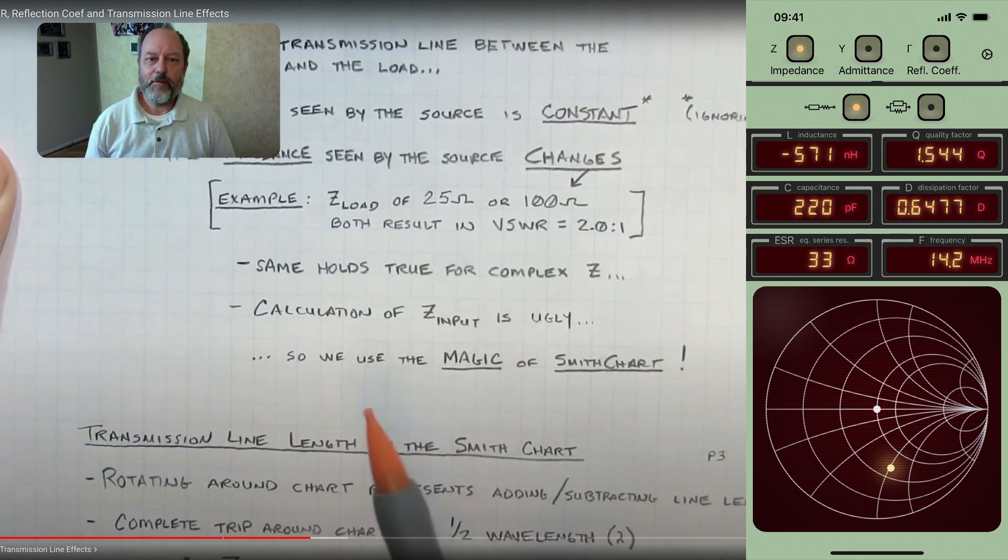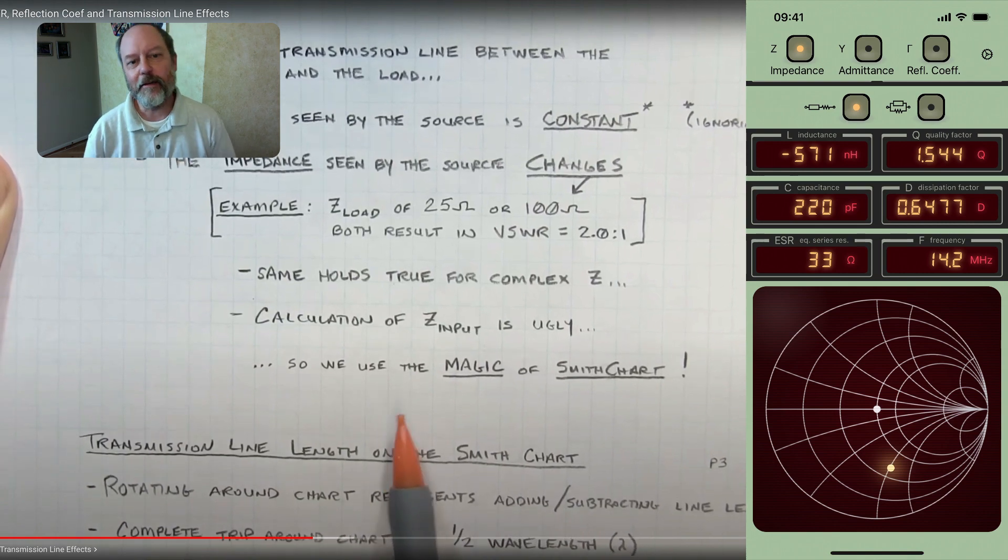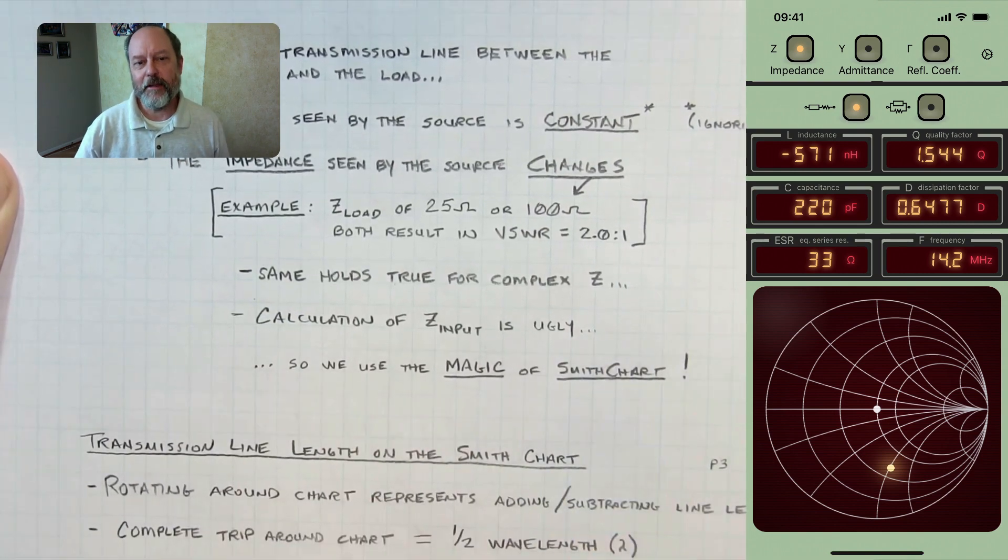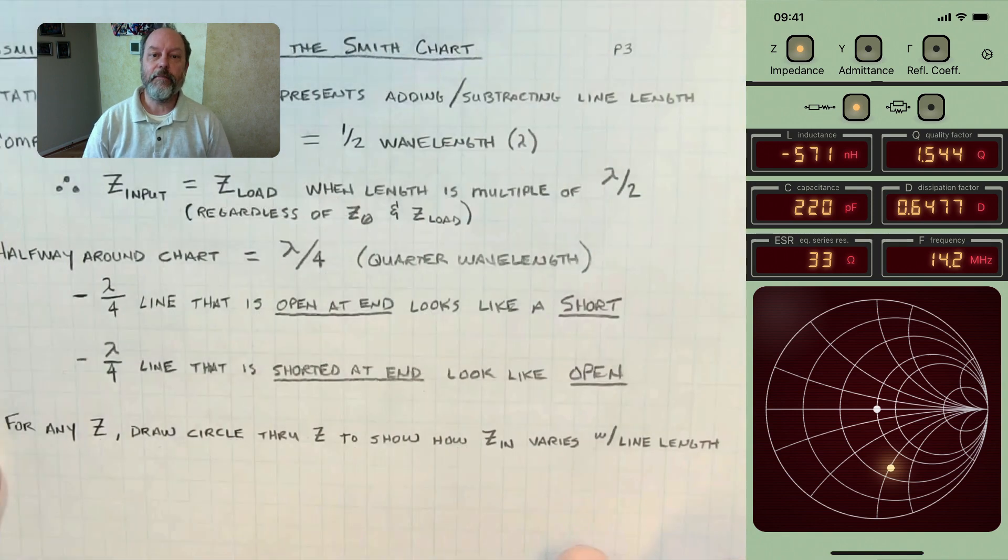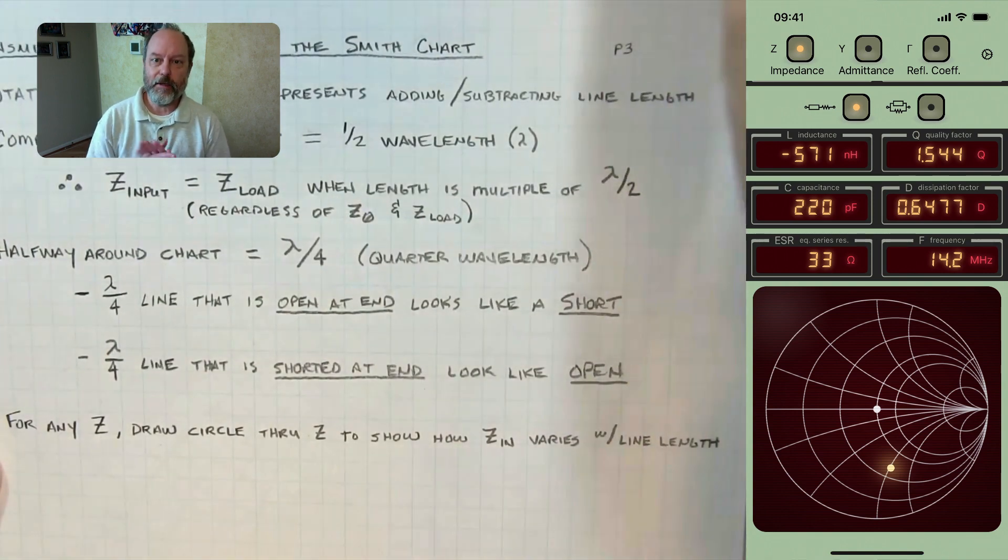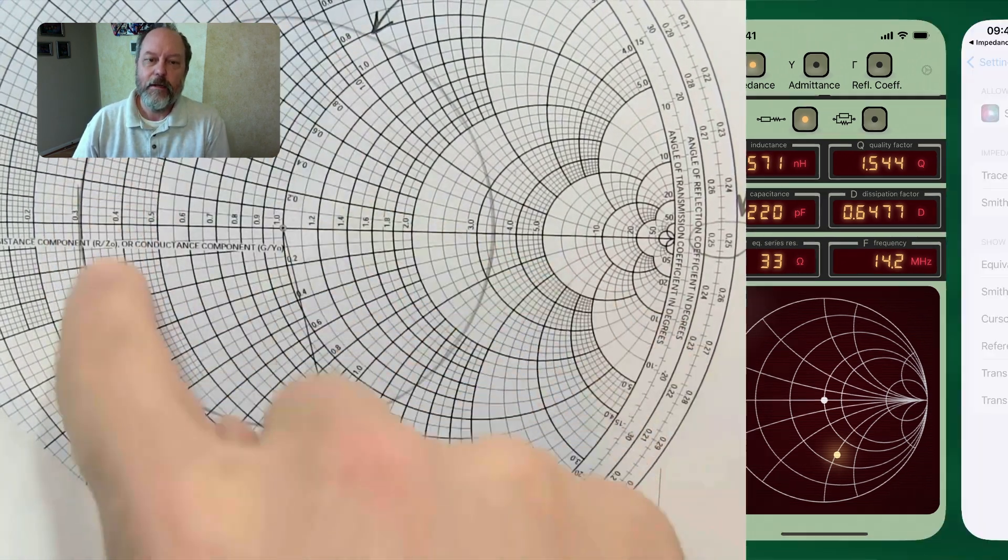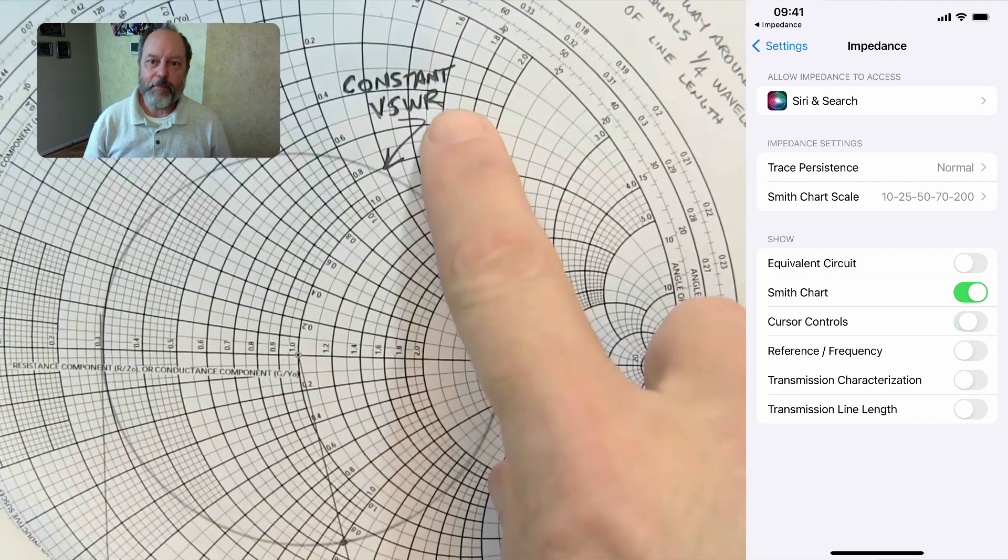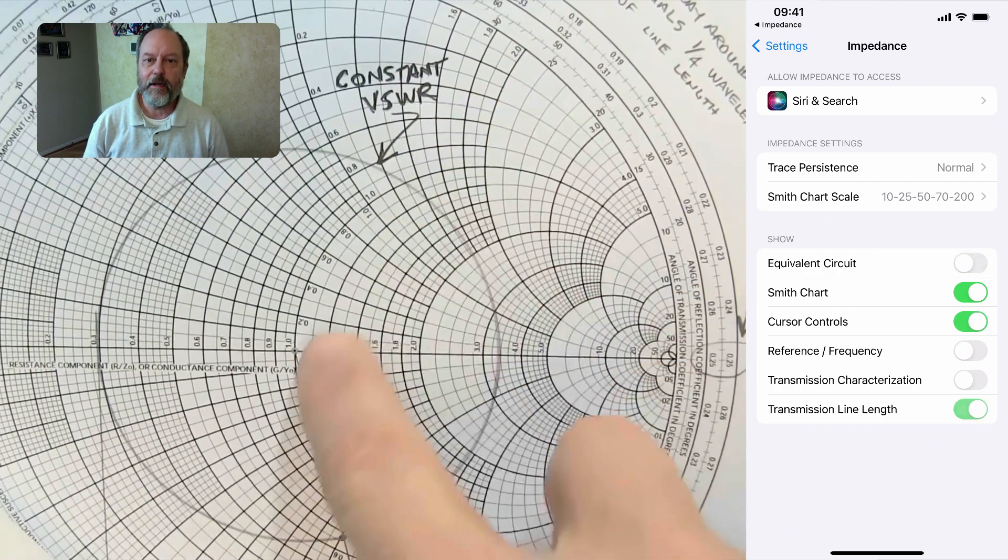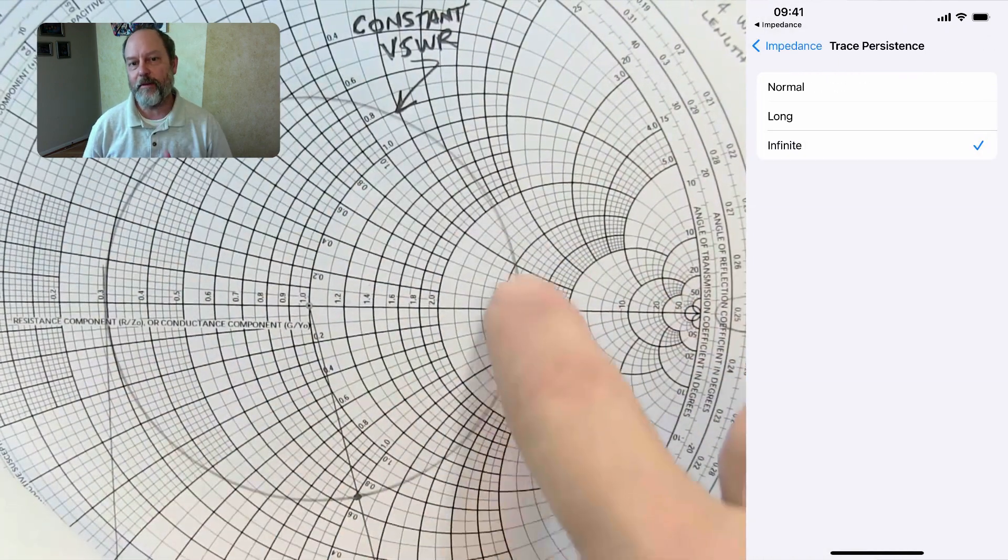So next, Alan shows how to use the Smith chart to determine transmission line effects. And Alan explains how the impedance, when you look through a transmission line, how the impedance changes based on the line length, but the SWR itself doesn't change. So to start, let's go into the settings in the app and enable the cursor controls and the transmission line length view. And we can also enable infinite trace persistence.